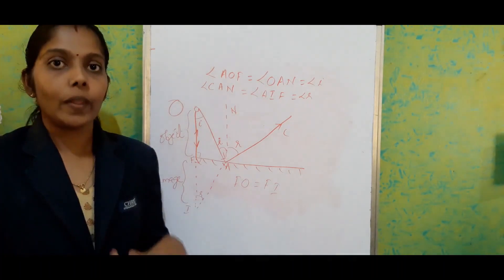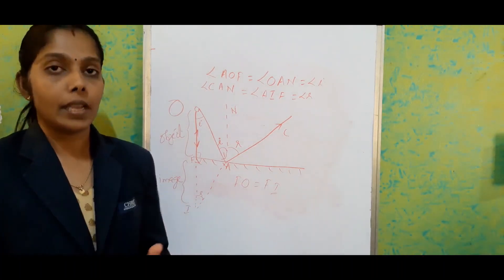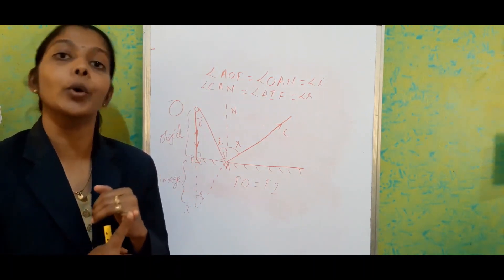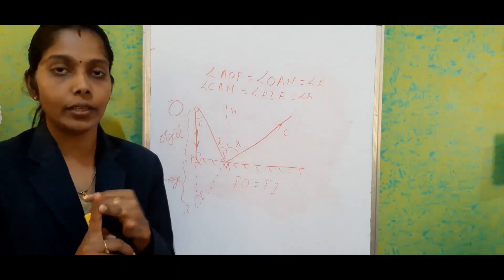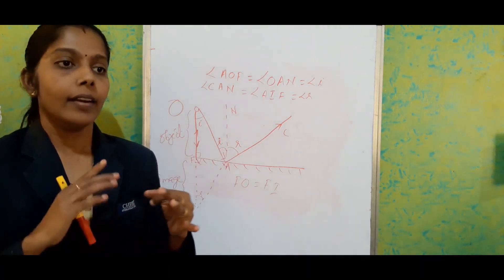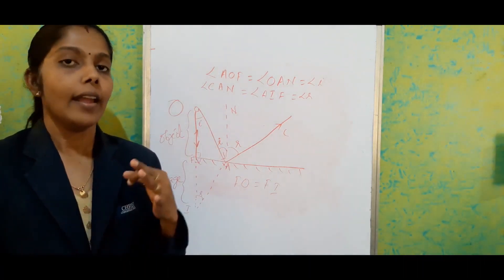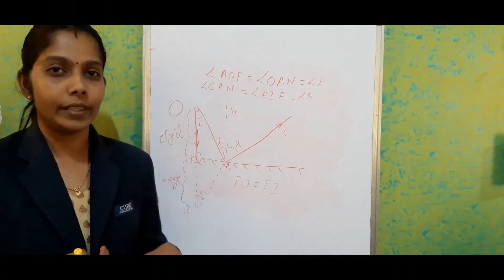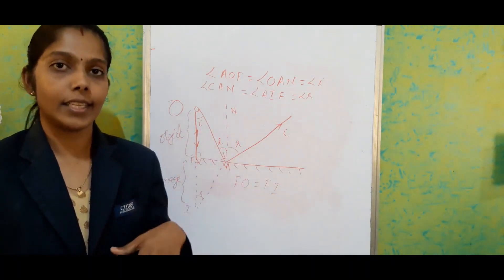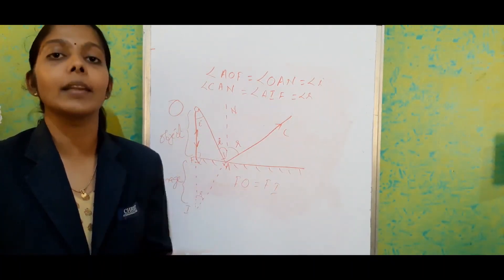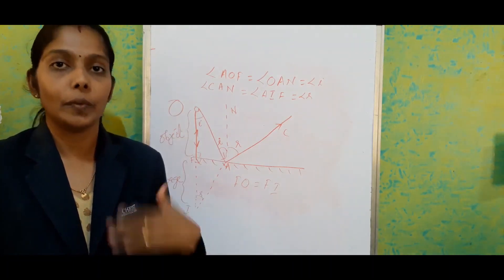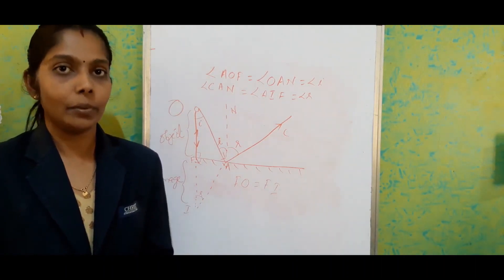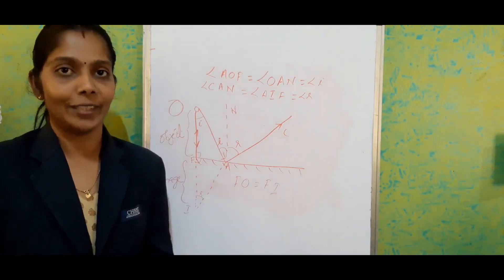Now we conclude with the properties of the image formed by a plane mirror. First, it always forms a virtual image. Second, it is erect in nature. Third, it shows lateral inversion. Fourth, the image distance is always equal to the object distance. This section and the last section are essentially a repetition of what we studied in 7th standard, so please refer to your 7th standard book and prepare notes. Thank you.